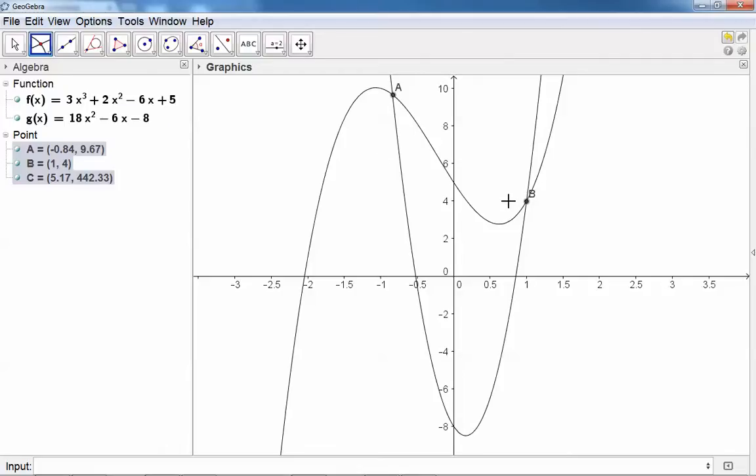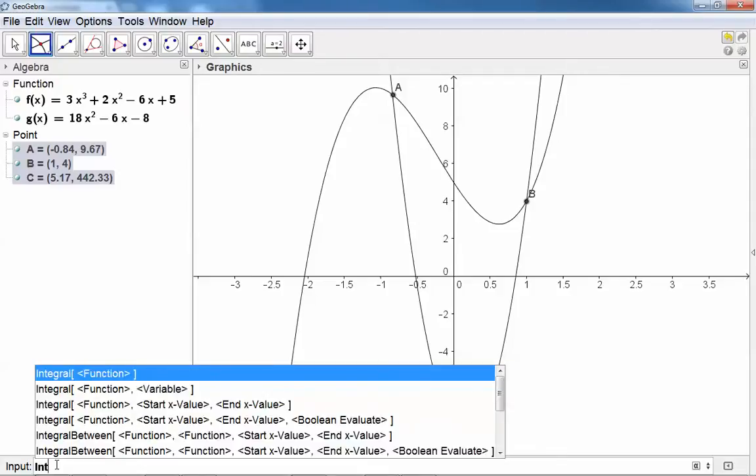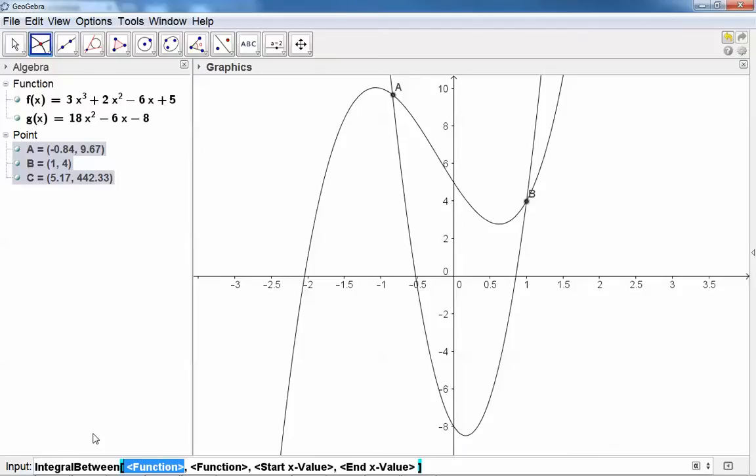Now we can determine the area between the two graphs. To determine the area, use the integral between command. It's the integral between two functions: the first function is f, the second function is g, the start value is the x-value of point A, and the end value is the x-value of point B.